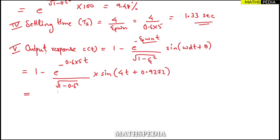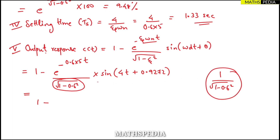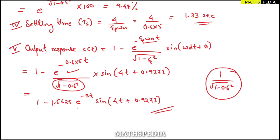Simplifying the denominator: 1 / √(1 − 0.6²) = 1.5625. So the final answer is: C(t) = 1 − 1.5625 · e^(−3t) · sin(4t + 0.9272).